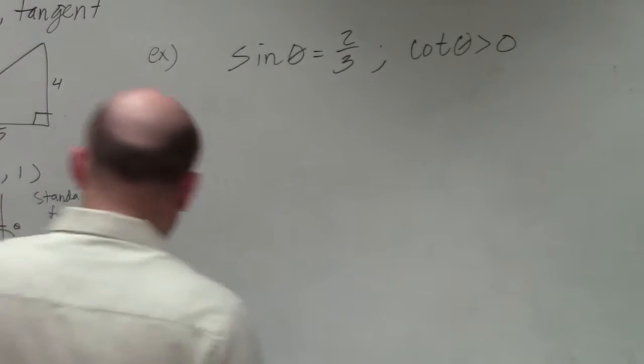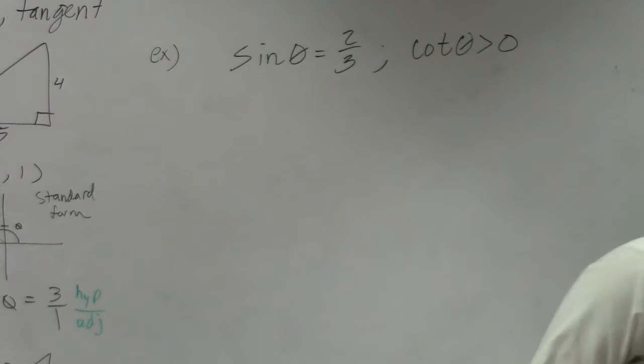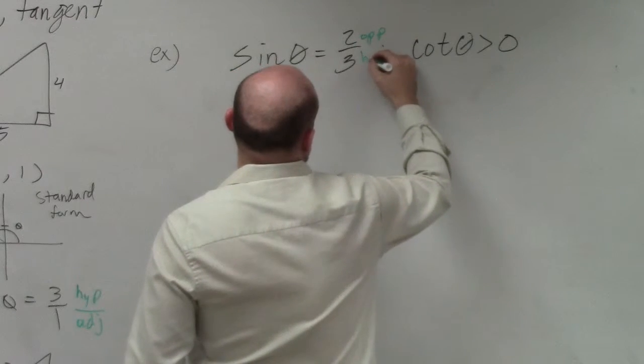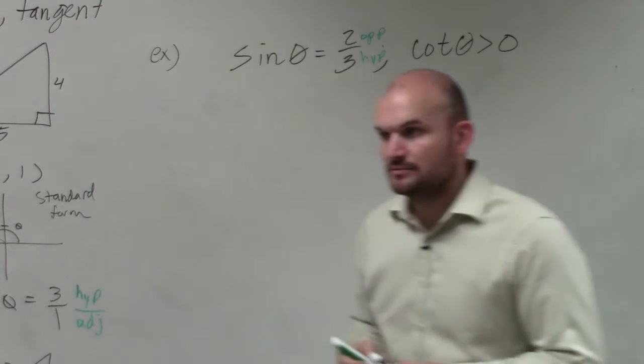Alright, so we know that a triangle is opposite over hypotenuse, right?